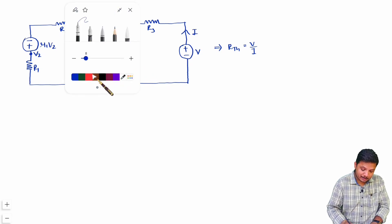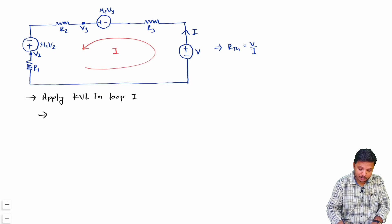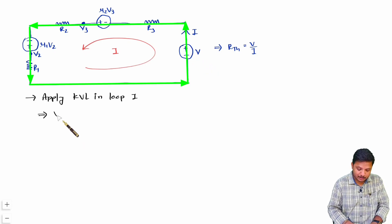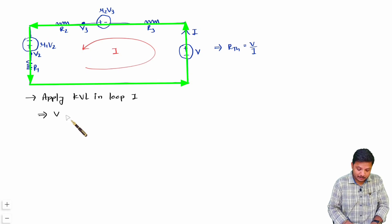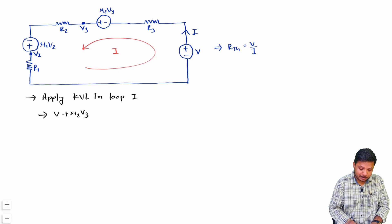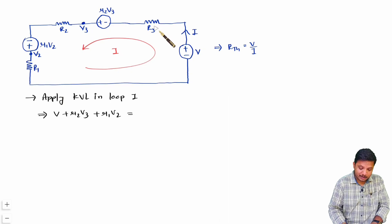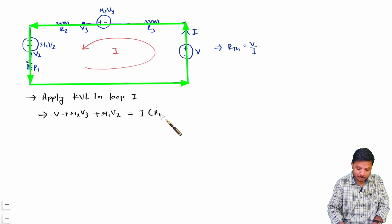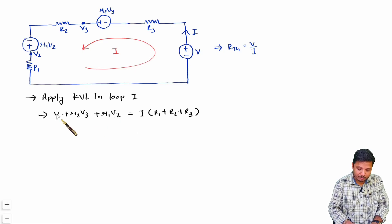Since there is only one loop with current I, I apply KVL in this loop. Going around, the voltage source V gives +V (minus to plus), and the dependent source μ1·V2 gives +μ1·V2 (also minus to plus). The voltage drops across the resistances give I·(R1 + R2 + R3). So the KVL equation is: V + μ1·V2 = I·(R1 + R2 + R3). Now I need to find V2 and V3 in terms of I.